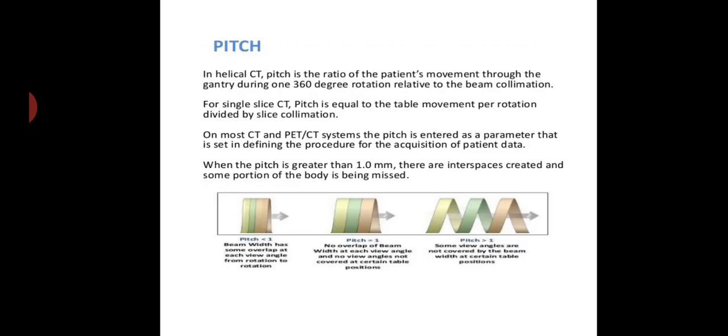Pitch. In helical CT, pitch is the ratio of the patient's movement through the gantry during a 360-degree rotation related to the beam collimation. For single slice CT, pitch is equal to the table movement per rotation divided by slice collimation. On most CT and PET CT systems, the pitch is entered as a parameter that is set in defining the procedure for the acquisition of patient data. When the pitch is greater than 1, there are interspaces created and some portion of the body is being missed.